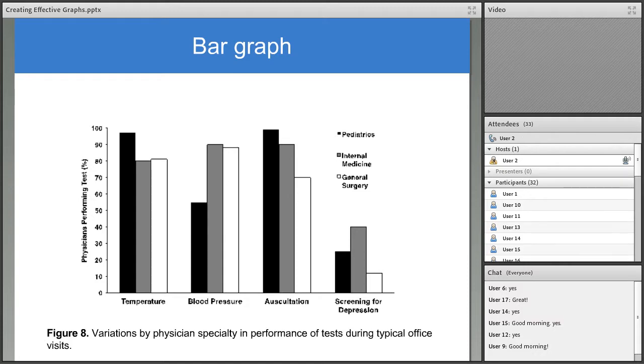Bar graphs or bar charts are used to compare amounts, frequencies, or magnitudes for categories of discontinuous data. This bar graph shows variations by physician's specialty in performance of certain tests during typical office visits. Bar graphs have one quantitative variable. Since this is a vertical or column graph, that quantitative variable is on the y-axis. Here, the measured variable is the proportion of physicians who did perform the tests. The categorical variable is on the x-axis. In this case, the four tests performed. In this clustered bar graph, for each test, there is a cluster of bars representing subcategories, with the different shading of the bars representing different physician specialties. A key explaining the bar shading is easy to find.